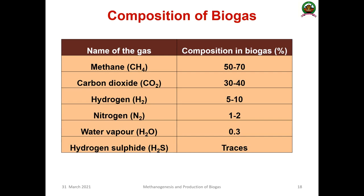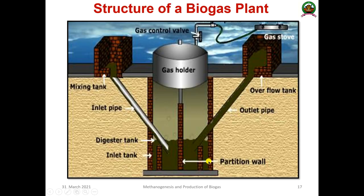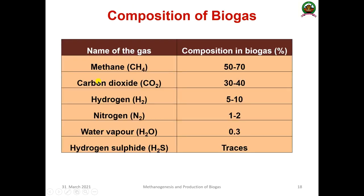The composition of biogas: the main component is methane at 50–70%, followed by carbon dioxide at approximately 30–40%, hydrogen at 5–10%, nitrogen at 1–2%, water vapor at 0.3%, and trace amounts of hydrogen sulfide.